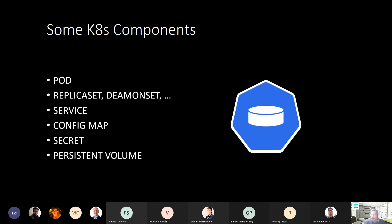Kubernetes provides volume capabilities. There are two related objects: the PersistentVolume, which can be defined by an administrator, and the PersistentVolumeClaim, which you define as a user to claim a persistent volume for your pod or container. These are the different objects available in Kubernetes to run your application.